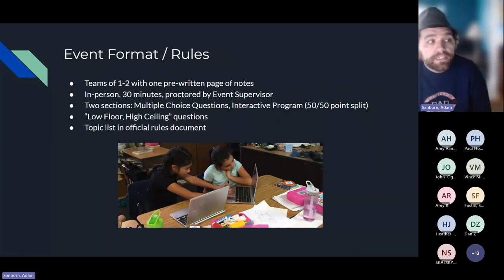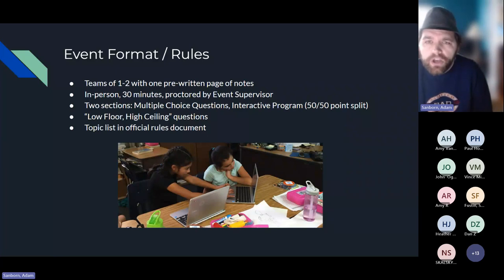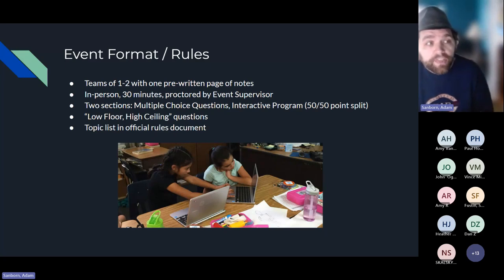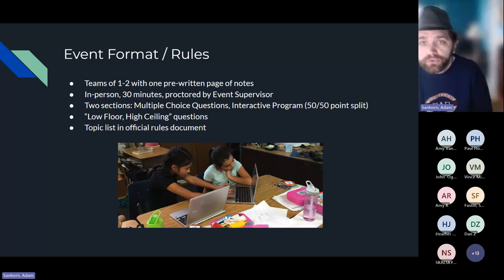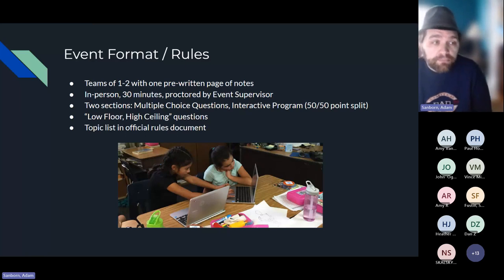The event format: teams of one or two — I recommend two, especially the way the event is set up. They can have one pre-written page of notes; they can put whatever they like on there, no restrictions. It'll be in-person, 30 minutes, proctored by me. There are two sections this year: one section of multiple choice questions about Python, coding concepts, variables, and anything covered in the scope document on the website. The second portion is the interactive program where students get their hands on programming concepts.